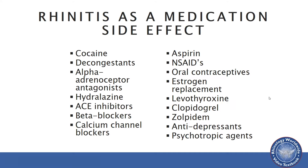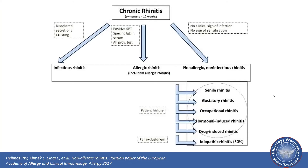Many of them affect the vasculature, as listed on the left side of the screen, and there are also various hormones, psychotropic agents, as well as the NSAIDs and aspirins which we are very familiar with. Chronic rhinitis as a whole is nicely illustrated in a diagram from a paper from the European Academy of Allergy and Clinical Immunology published in 2017. Chronic rhinitis can be broken up into infectious rhinitis, allergic rhinitis, and non-allergic non-infectious rhinitis. Idiopathic or vasomotor rhinitis makes up 50% of those patients with non-allergic rhinitis.